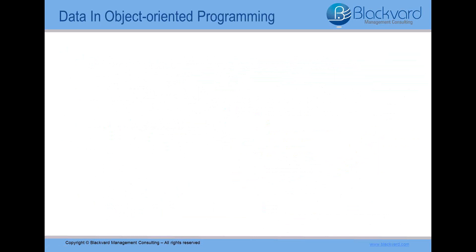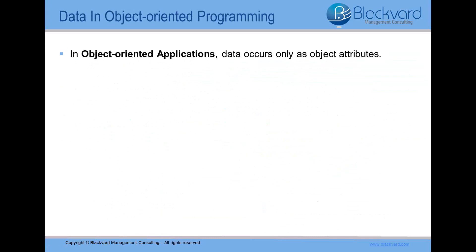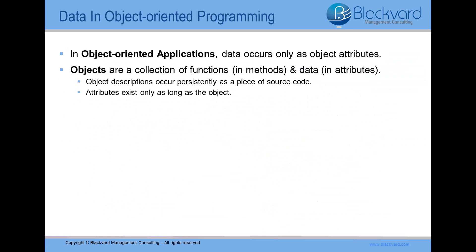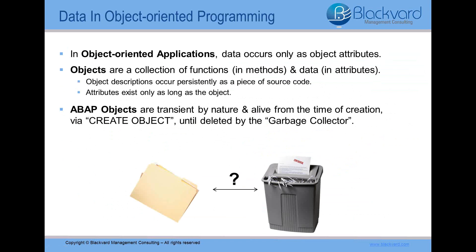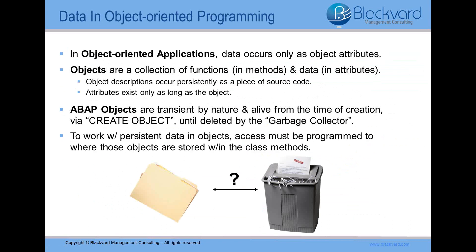Now let's touch on data in object-oriented programming. In an ideal object-oriented application, data occurs only as the attributes of objects — that is, if we ignore the local data in methods. Objects are a collection of functions and data, so the description of an object or the class occurs persistently as a piece of source code, but its attributes exist only as long as the object. However, an object in ABAP objects is transient in principle. It exists in the internal program session only from the time it is generated until it is deleted by the garbage collector. The purpose of garbage collection is to identify and discard objects that are no longer needed by a program so that their resources may be reclaimed and reused. Therefore, to work with persistent data in objects, you must perform access to where those objects are stored within the methods of the class.